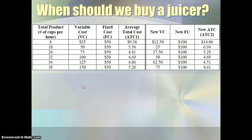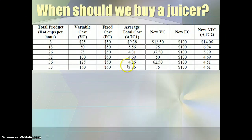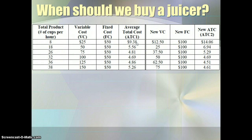Another example: a lemonade stand with two employees trying to decide whether to buy another juicer to make more lemonade. With one juicer we can see their average total costs in this column. If they're considering a second juicer, their fixed cost increases because they have to rent the machine, but their variable costs may go down because it takes fewer hours to make the same amount of lemonade. With one juicer at eight cups per hour, the average total cost is $9.38, which is less than $14.06 with two juicers.